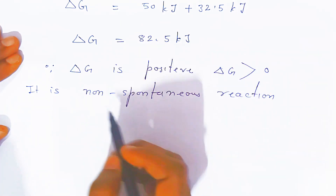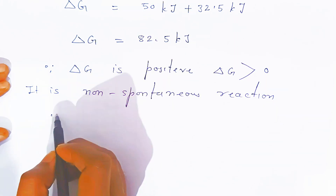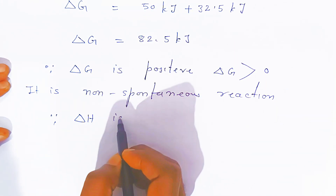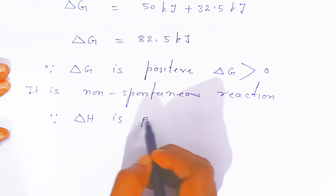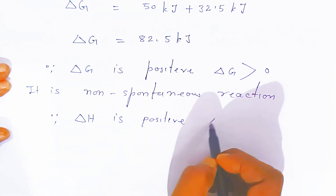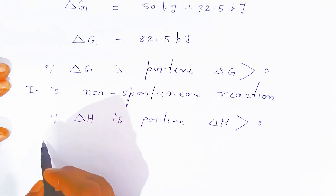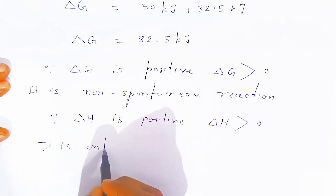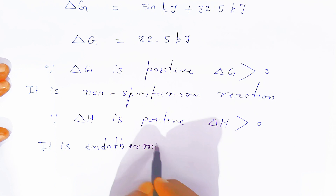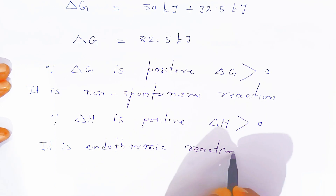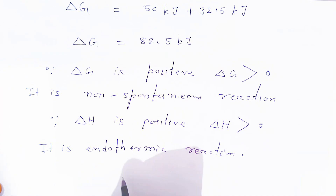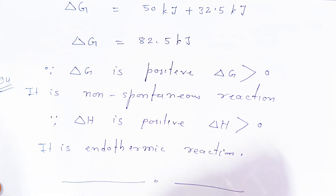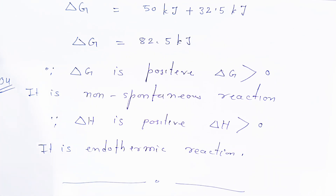So this is the answer for the second part. Since ΔH value is positive — that is 50 kilojoule — ΔH is also greater than 0, so it is an endothermic reaction. So this way, for 4 marks questions, they will ask in examination — this way you have to write for 4 marks questions. If you like my video, please share it and subscribe. Thank you very much. Have a nice day. God bless you.